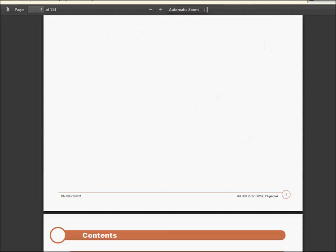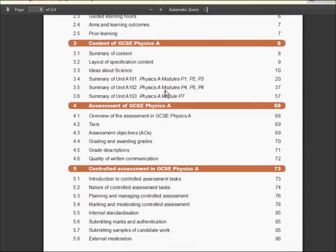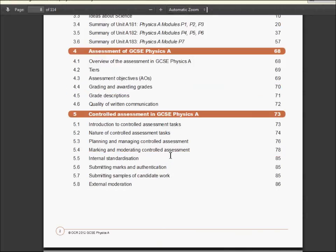It's loaded a little bit. Look here, scroll down a bit, we can find the contents. So introduction to the whole thing, controlled assessments, coursework. What we're interested in here is a summary of the P7 unit, which is displayed on page 57.